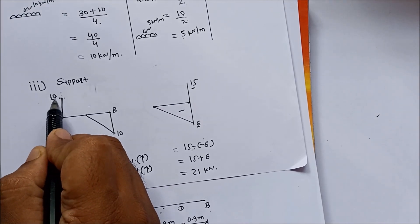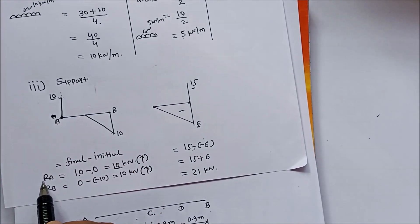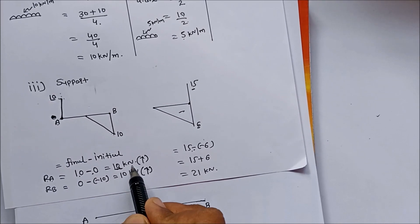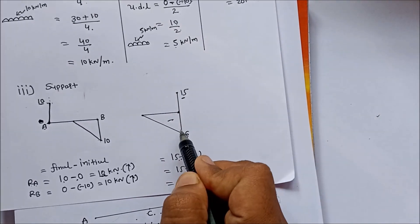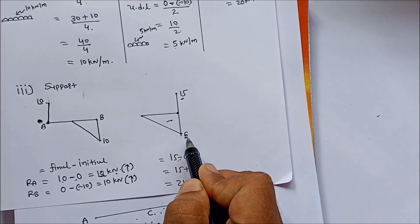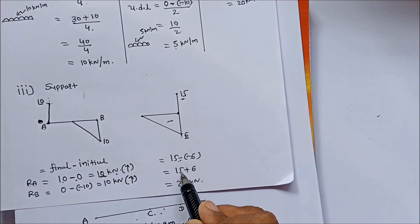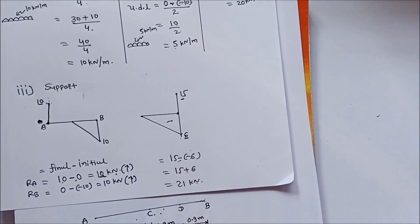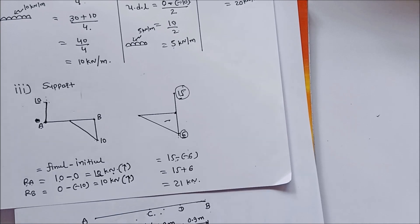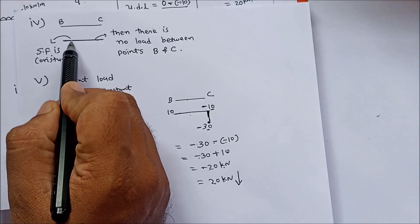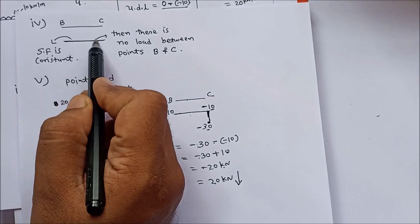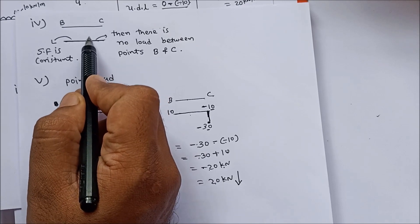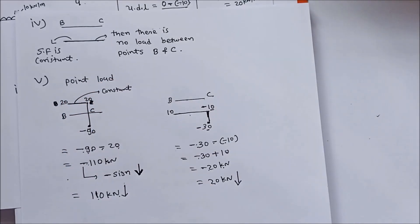For example, here the final value is 10 and initial is 0, so reaction at A equals 10 minus 0, that is 10 kN. In another case, final condition is 15 and initial is minus 6, so 15 minus (minus 6) equals 15 plus 6, that is 21 kN. Also, if the shear force diagram shows a horizontal line between B and C, the shear force is constant between those points, meaning there is no load between B and C.